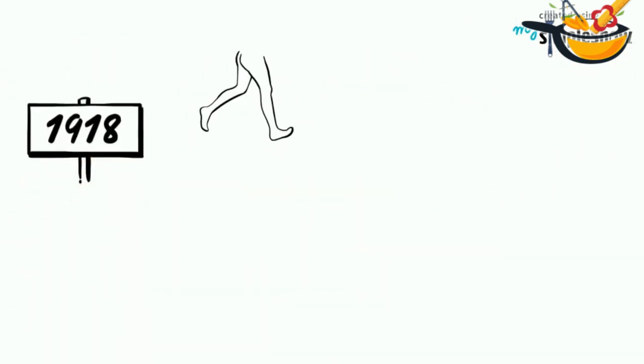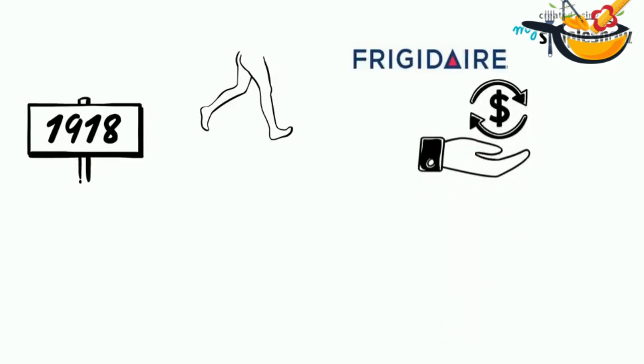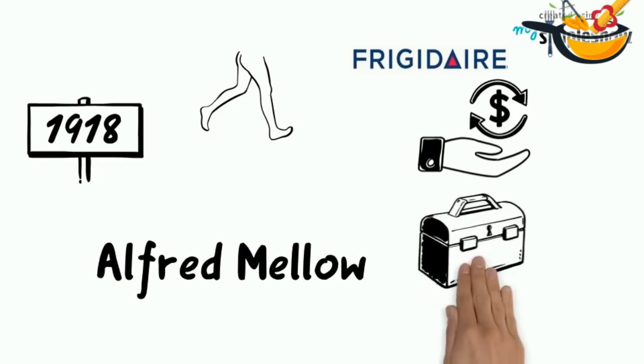In 1918, the first commercial movement was taken through Frigidaire Company. They sold the model of Alfred Melos. Then the manufacturing began.